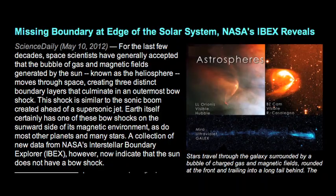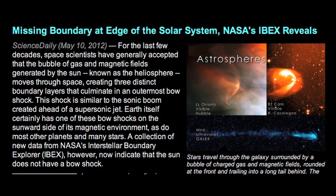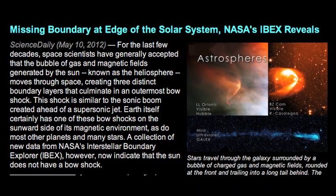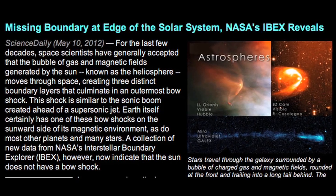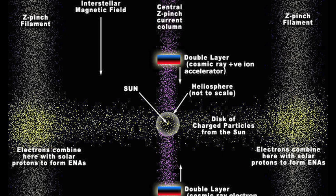The EU model certainly predicts there to be an electrical virtual cathode out there in that neighborhood. And all of the data that NASA has just released this week absolutely confirms that. They couldn't be more consistent with what our predictions have been.